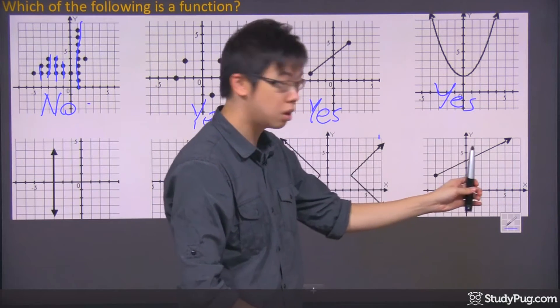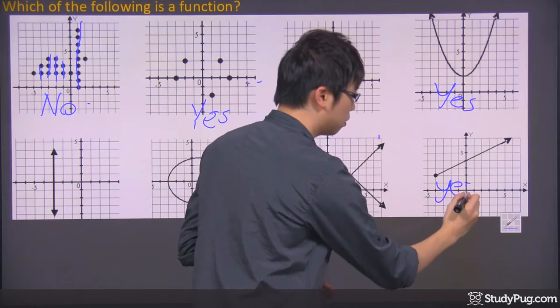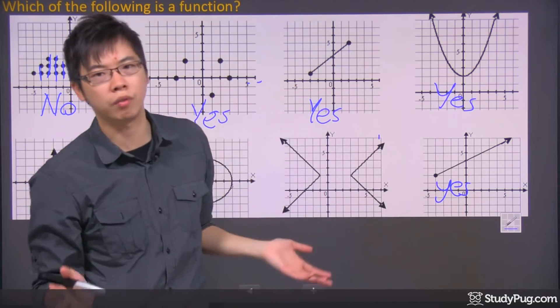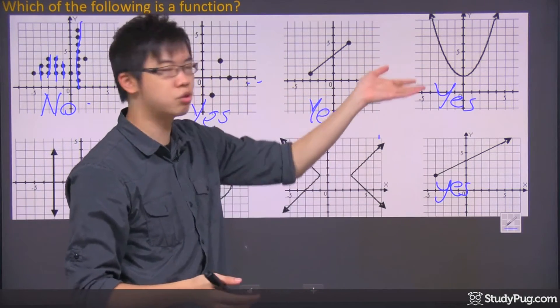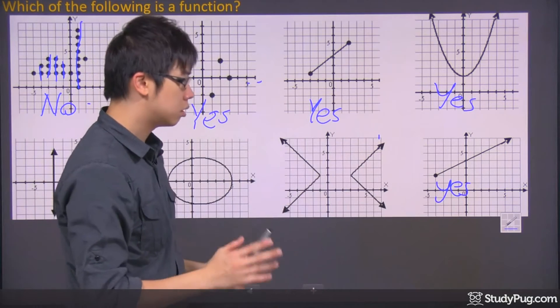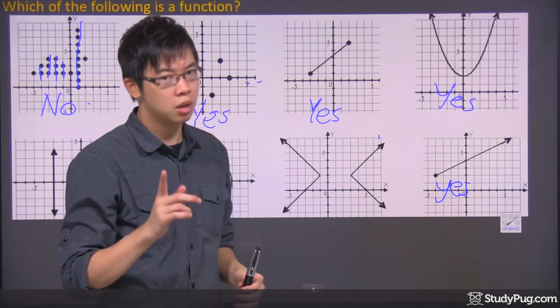What about this one over here? Same thing. You start to see a little pattern right here. As long as you don't touch your graph, doesn't matter what the graph looks like. Could be going up, quadratic, cubic, doesn't matter. As long as it doesn't touch the graph more than twice, it is a function.